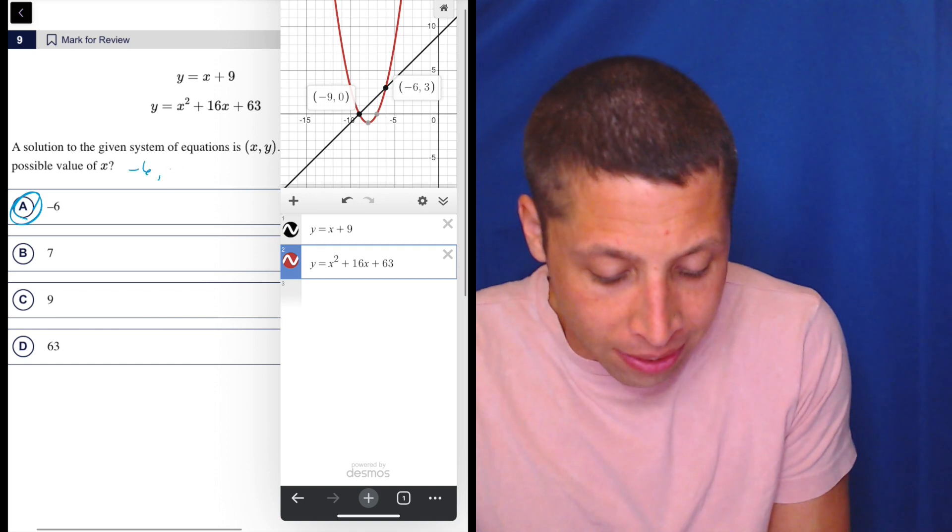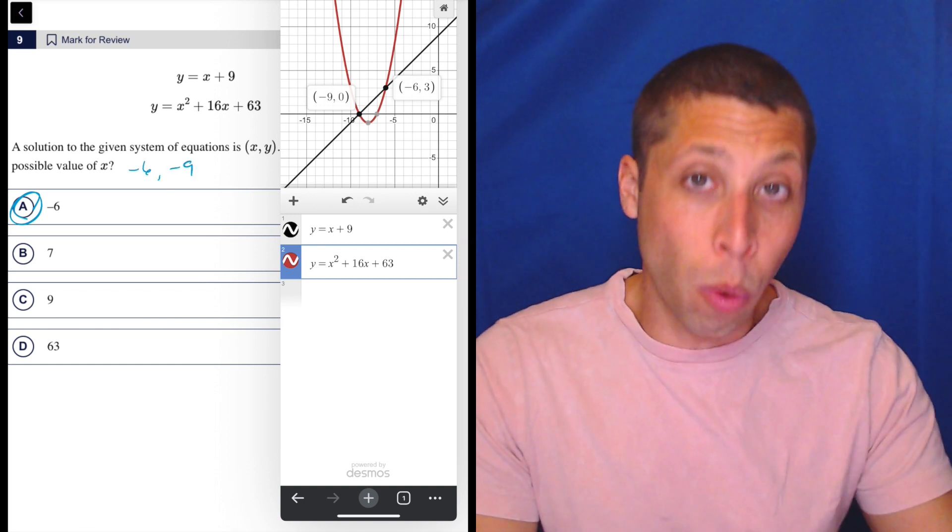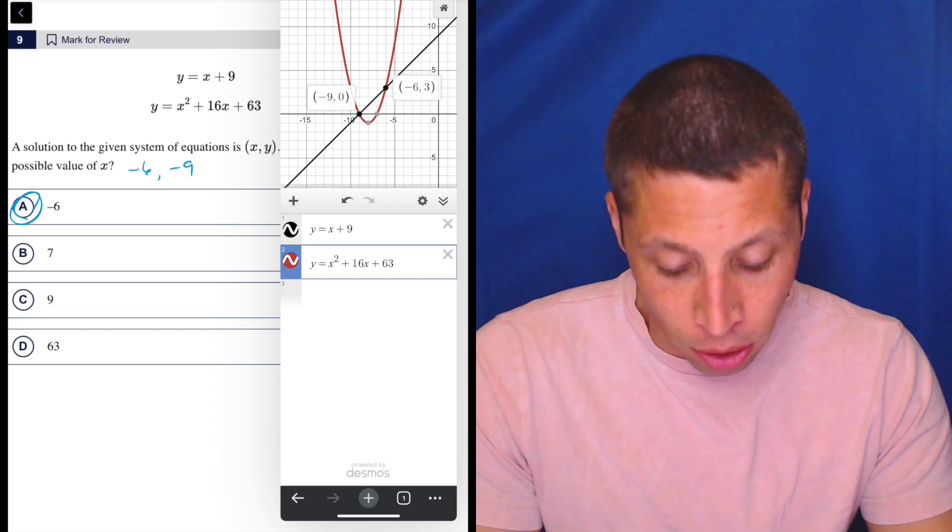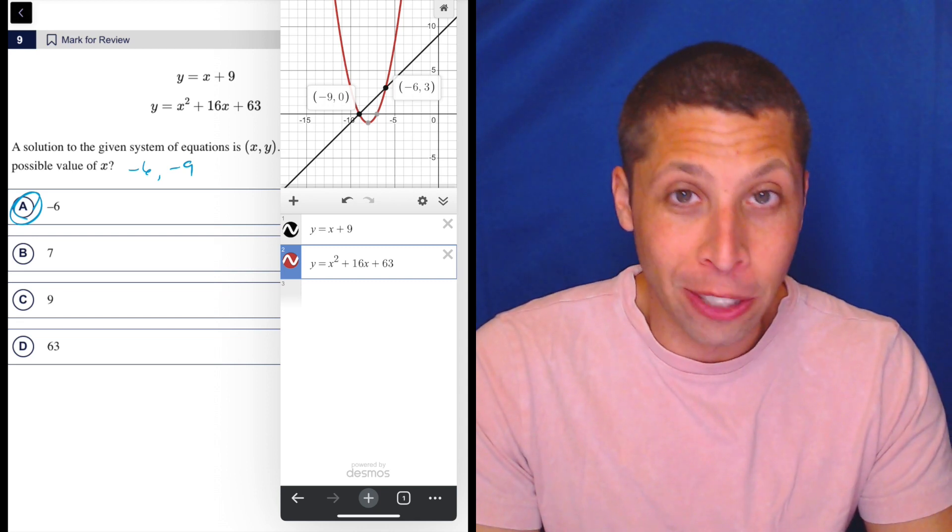That's the answer, and it makes sense because there are two possible values of x. They are negative six and negative nine, the x coordinates of both of those points. But there you go. That's it. That's all we have to do is look at the point and tap it.